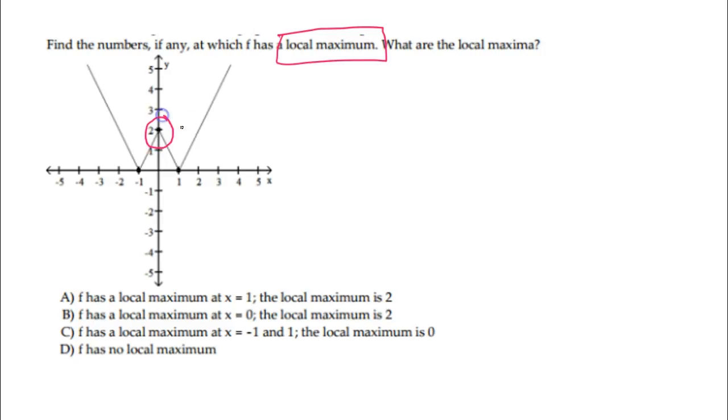There's only one of those, right here at the top of a hill. So we have a local maximum at x equals 0. See how it's right in the middle?